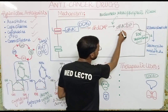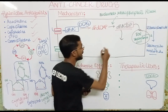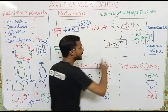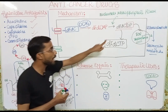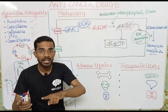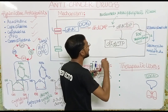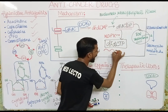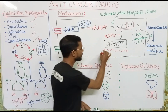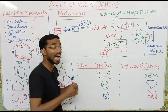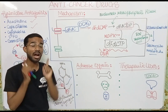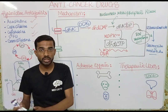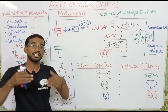The diphosphate compound can also convert into difluorodeoxycytidine triphosphate, with another phosphate group added by the enzyme nucleotide diphosphate kinase. This triphosphate compound directly inhibits DNA synthesis. So we have discussed two pathways: the diphosphate blocks ribonucleotide reductase to stop DNA synthesis, and the triphosphate has its own pathway to inhibit DNA synthesis.